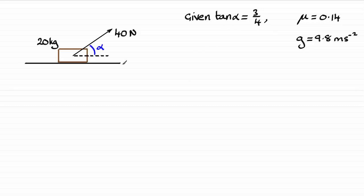It's on a rough horizontal plane, coefficient of friction mu is 0.14. I'm taking g to be 9.8 meters per second per second in this question, and we've got to work out what the acceleration of this particle would be.